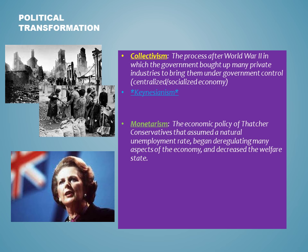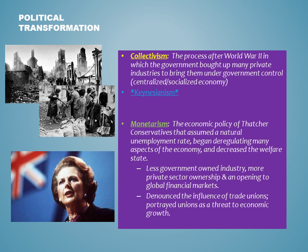But by the 1970s, high inflation and high unemployment led many to believe that collectivism was outdated. A conservative government under the Iron Lady Margaret Thatcher adopted a totally different economic strategy known as monetarism, in which the conservatives began assuming a natural unemployment rate, deregulating many aspects of the economy, and decreased the welfare state. This included less government-owned industries, more private sector ownership, more reliance on global financial markets, and they also highly denounced the influence of trade unions, believing that unions were driving up the price of doing business.